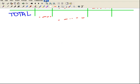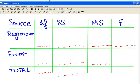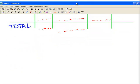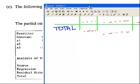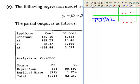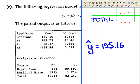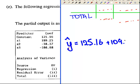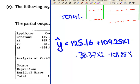I am particularly interested in the ANOVA procedure table. I want to write this down. y hat equals 125.16 plus 109.25x1 minus 38.37x2 minus 108.88x3. That's the regression equation.